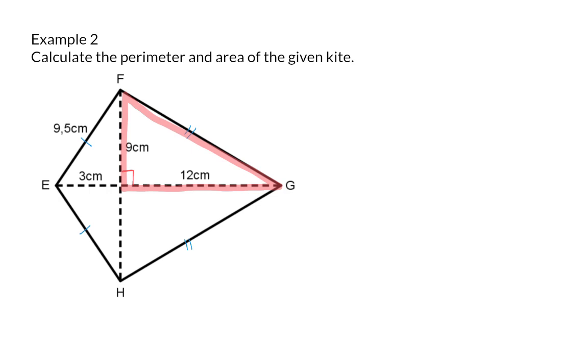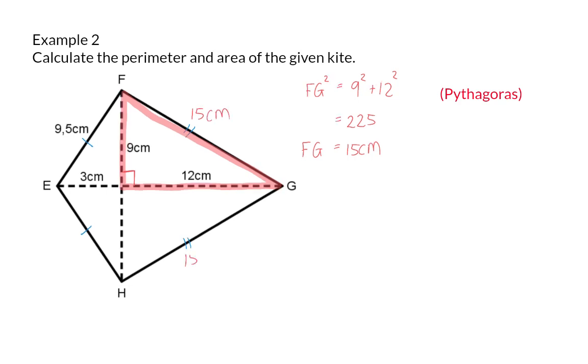So, to start off, we are going to determine the length of FG squared, and according to the theorem, this is 9 squared plus 12 squared. This gives us a value of 225, and the square root of that will give us FG as 15 centimeters. So, now we know the other two sides of this kite will be 15 centimeters each.